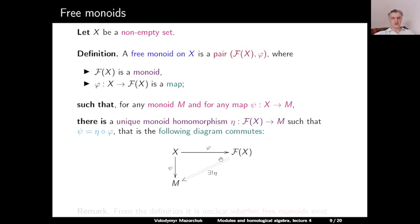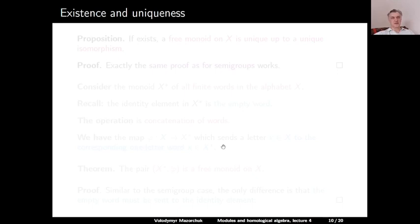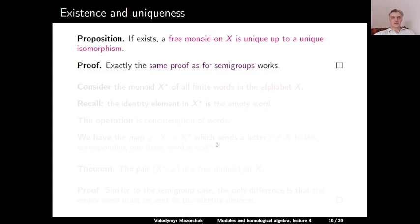So the definition is exactly the same as for semigroups, but replacing the word 'semigroup' with 'monoid'. From the definition it is unclear whether free monoids exist, but we will construct them. Now let's discuss existence and uniqueness. Proposition: if it exists, a free monoid on X is unique up to a unique isomorphism. Exactly the same proof as for semigroups works also for monoids.